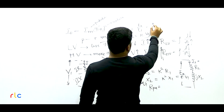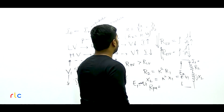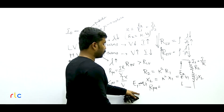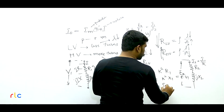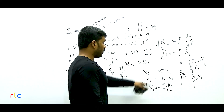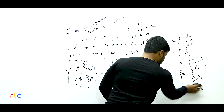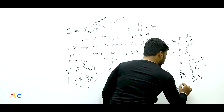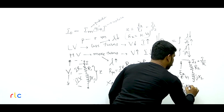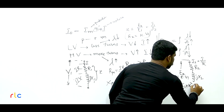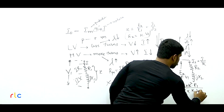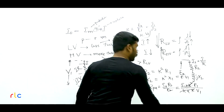For a 33/11 kV transformer with LV near core: insulation between core (0V) and LV (11 kV) requires 11 kV insulation; between LV and HV (33 kV) requires 22 kV — total 33 kV. If HV were near core instead: insulation between core (0V) and HV (33 kV) needs 33 kV; between HV and LV needs 22 kV — total 55 kV. LV-near-core arrangement requires significantly less insulation, so Statement 2 is correct.